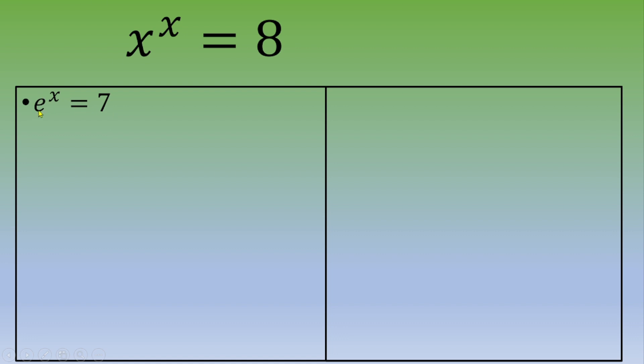then you apply on both sides natural log. Natural log of e to the x equals natural log of 7.